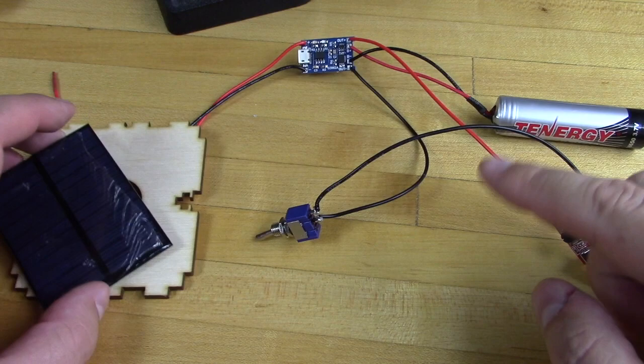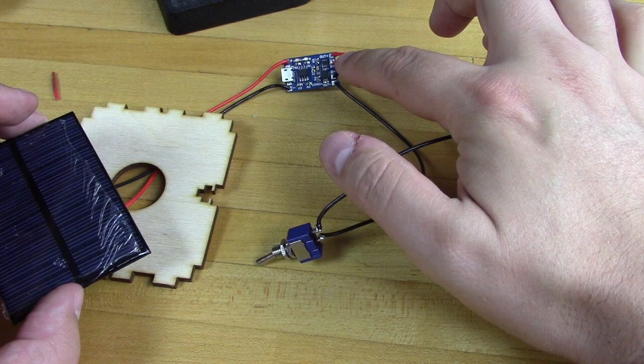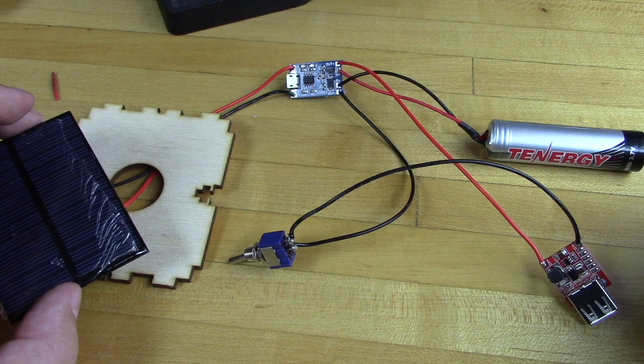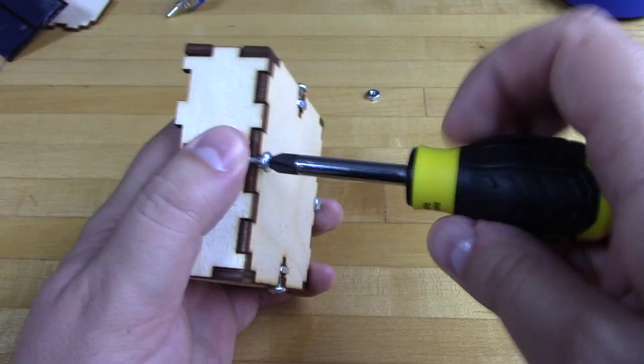At this point, your entire circuit should look just like this. The solar cell going to the front positive and negative next to the USB port. The battery going to B positive and B negative on the lithium charge controller board. The red wire from the USB circuit going to the out positive on the board. And the black wire coming off of your switch should be going to the out negative on that board.